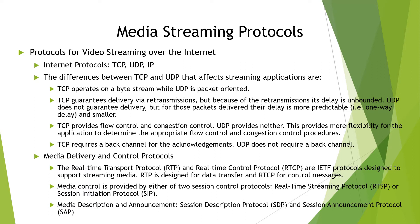Some differences between TCP and UDP that affect streaming applications: TCP operates on a byte stream while UDP is packet-oriented. TCP guarantees delivery via retransmission, but because of the retransmission, delay is unbounded. UDP does not guarantee delivery, but for those packets delivered, their delay is more predictable and one-way delay is smaller. TCP provides flow control and congestion control, but UDP provides neither.